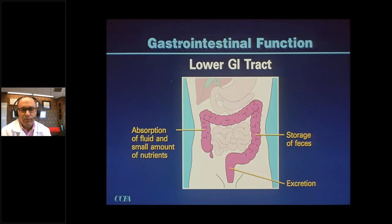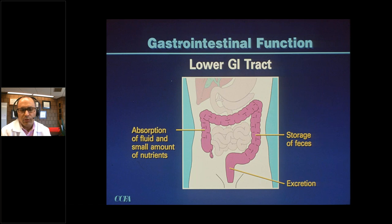Bile helps emulsify fat so it can be absorbed in the distal small intestine. The gallbladder stores bile for secretion when we have a meal. The pancreas neutralizes acid and helps break down proteins and carbohydrates. The lower GI tract is basically comprised of the colon. Most of the work of absorbing fluids and nutrients takes place in the small intestine. Remaining fluids and unabsorbable material go into the colon, moving from the right side — which is mostly liquid — to the left side, where almost all water is absorbed. The left side of the colon and rectum serve as a storage organ, allowing you to store stool until it can be conveniently evacuated.